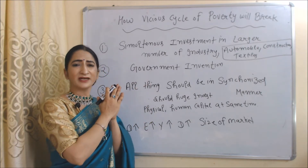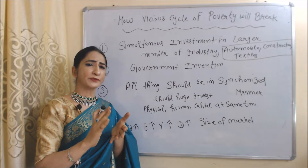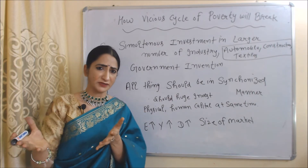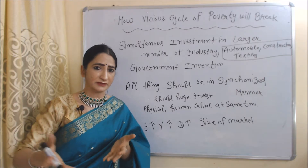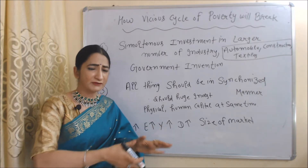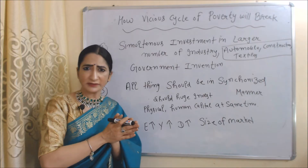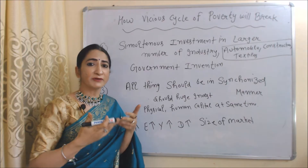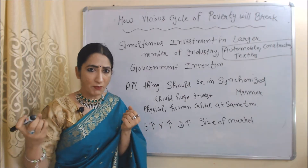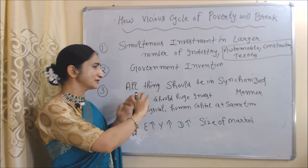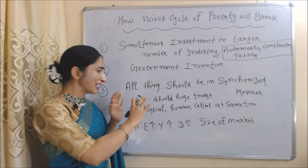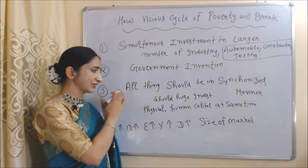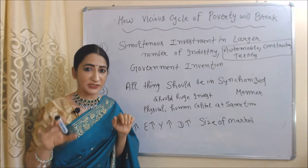Second, government intervention is a must. In underdeveloped countries, there is no opportunity of making profit in the market, so the private sector will not invest, because the main motive of the private sector is earning profit. If there is no opportunity of profit, private sector will not invest. That's why government intervention is a must — the government should intervene and invest in the market. All things should be done in a synchronized manner, meaning we should do huge investment in both physical capital and human capital at the same time.